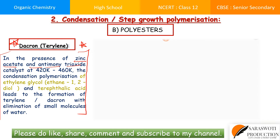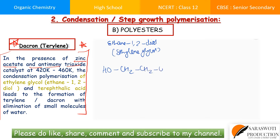Dacron/Terylene has two different monomers. Monomer one is called ethane-1,2-diol, also known as ethylene glycol — ethylene glycol is the common name, ethane-1,2-diol is the IUPAC name. Its structure is: HO-CH2-CH2-OH. Ethane means two carbons joined by a single bond, and diol means two -OH groups at position 1 and 2.